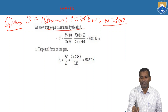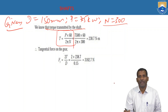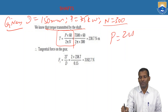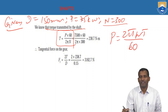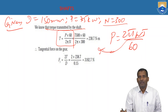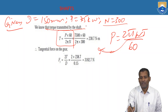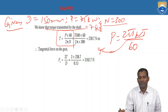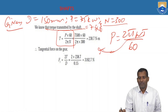The torque transmitted by the shaft is T = 60P / (2πN). We already know power = 2πNT / 60. The given power is 7.5 kilowatts converted into watts: 7.5 × 10³ watts, and N is 300 RPM. The obtained torque value is 238.7 Newton-meters.